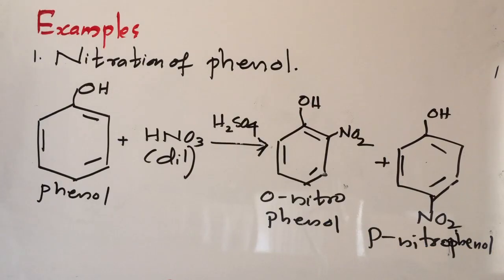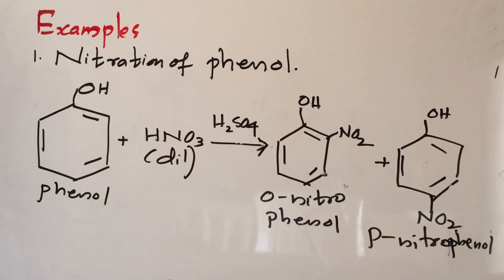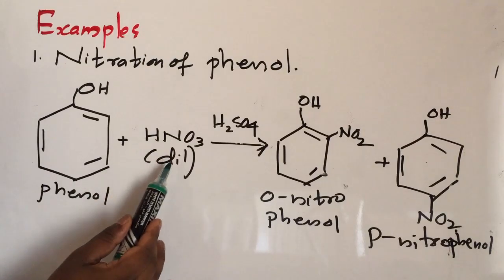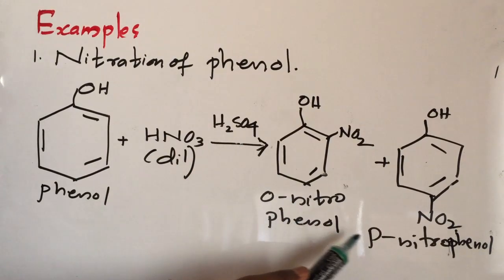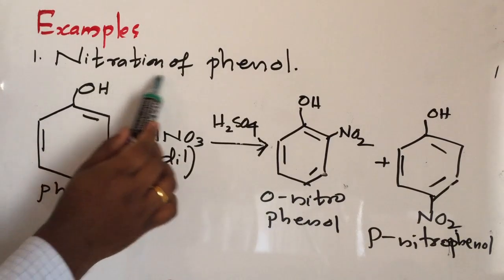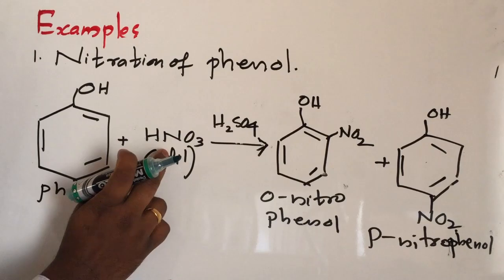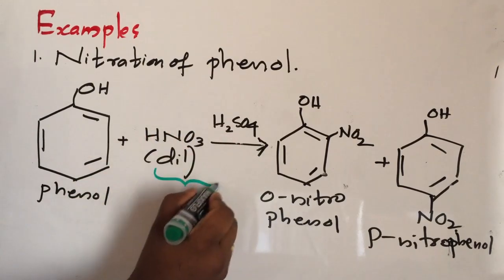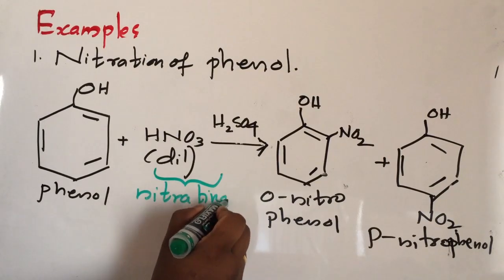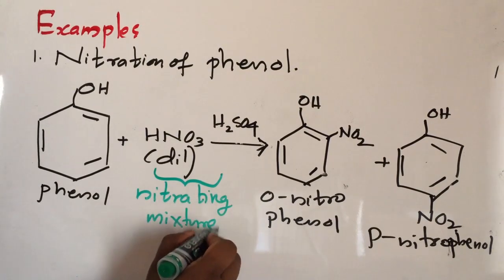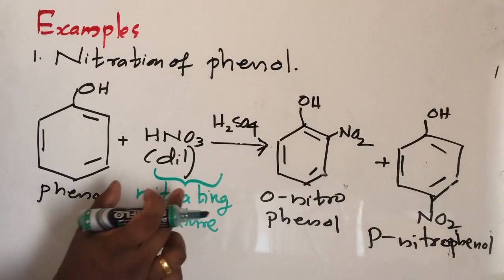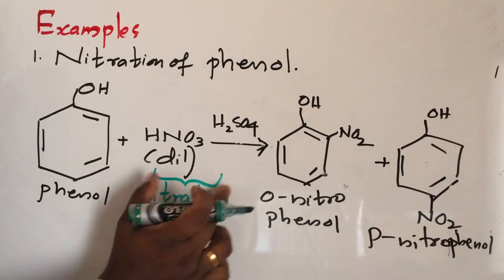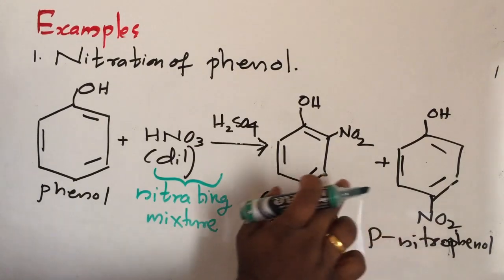An example of electrophilic substitution reaction of phenol is the nitration of phenol. When phenol reacts with dilute nitric acid in the presence of sulfuric acid, it forms ortho and para nitrophenol. This reaction is called nitration of phenol. The HNO3 and sulfuric acid mixture together is called nitrating mixture, and it is mainly used for introducing the NO2 group on the aromatic ring.